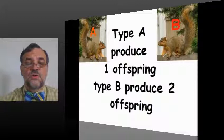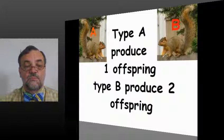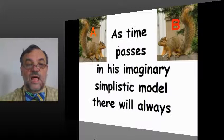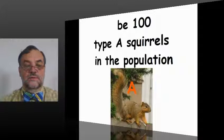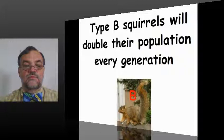Type A produce one offspring before they run over, we assume, while Type B produce two offspring before possibly dying of old age or whatever. As time passes in his imaginary simplistic model, there will always be 100 Type A squirrels in the population. Always. Type B squirrels will double their population every generation.